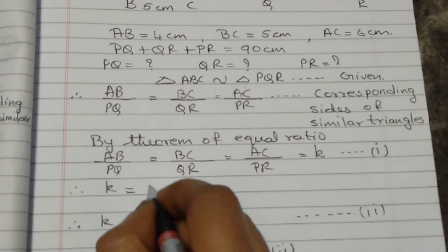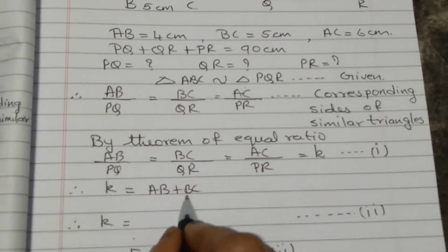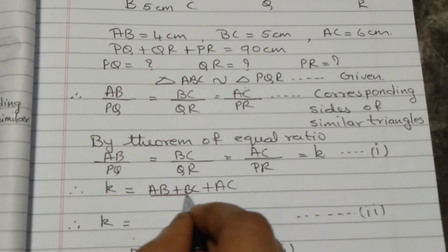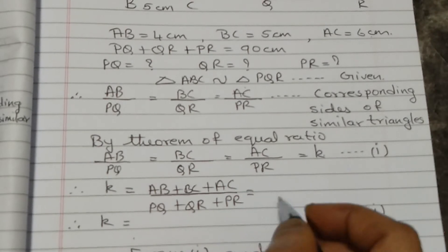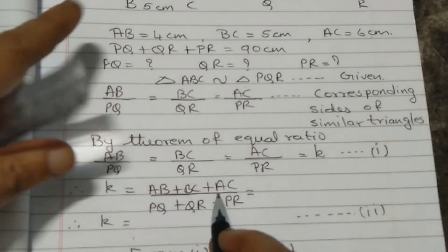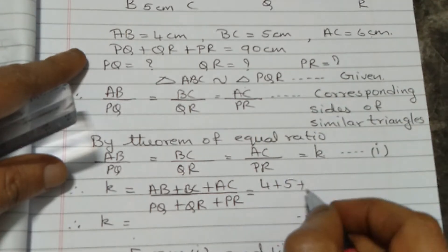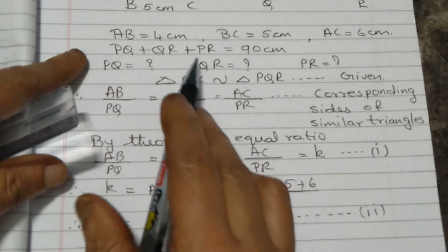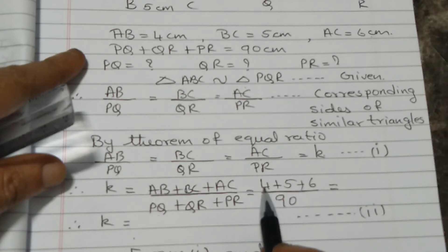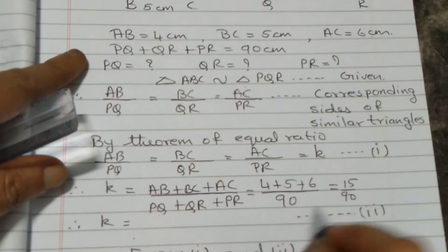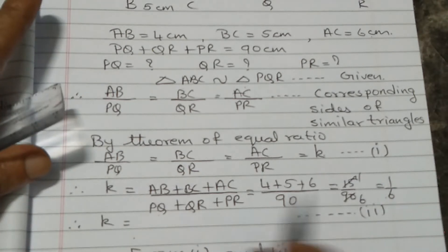By the theorem of equal ratio, (AB + BC + AC) / (PQ + QR + PR) = k. Substituting: (4 + 5 + 6) / 90 = 15/90 = 1/6. So k = 1/6.